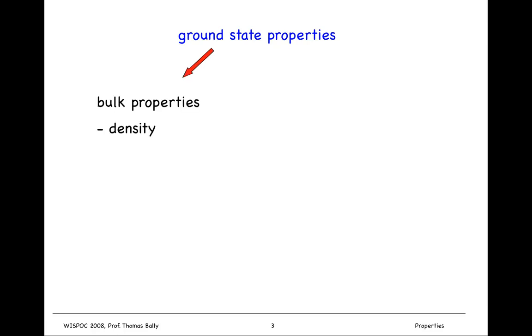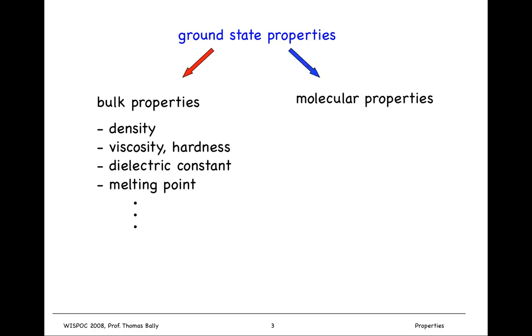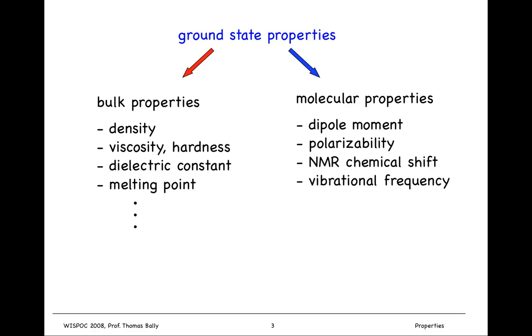It's useful to distinguish properties. Bulk properties of the ground state include things like density, viscosity, hardness, dielectric constant, melting point—hard properties to model when thinking about molecules. On the molecular properties side, we have quantities like dipole moment, polarizability, NMR chemical shift, vibrational frequencies that you get from infrared spectra, and so on.